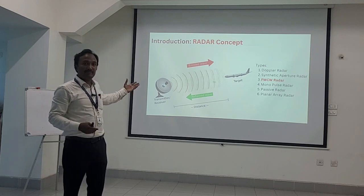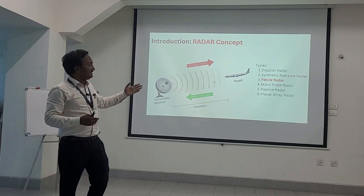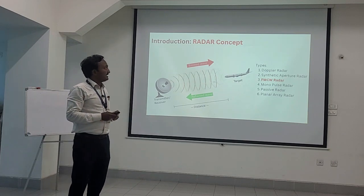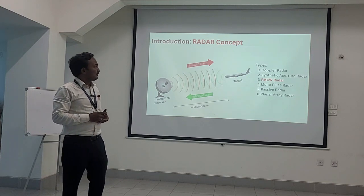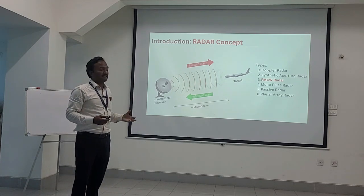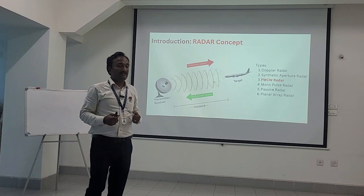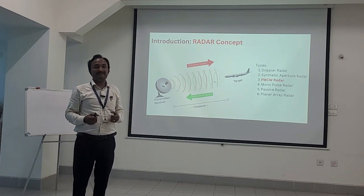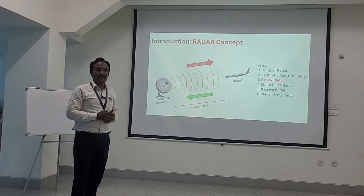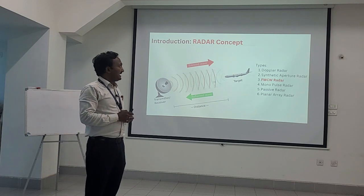In this case, it may be finding the distance between the target and the radar antenna. We have different types of radar: Doppler radar, synthetic aperture radar, FMCW radar, monopulse radar, passive radar, and planar array radar. Today we are going to concentrate mainly on FMCW radar, because our millimeter wave radar sensor uses FMCW as its modulation technique. FMCW stands for frequency modulated continuous wave, which we will explore further in our later discussions.